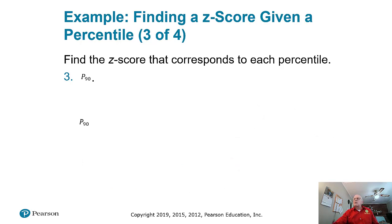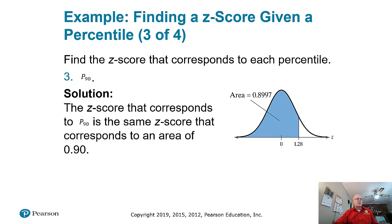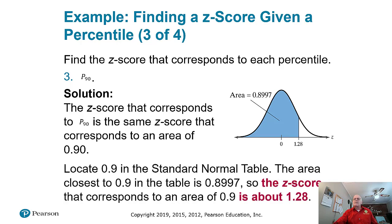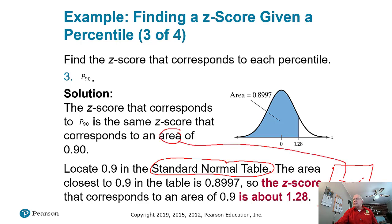There are also standard normal tables in the back of most statistics books that allow you to go from areas to z-scores. Inside the table are decimal areas. Once you find one, you find the z-values using what's on the top and the left-hand edge. But we're using calculators, so we won't focus on that.